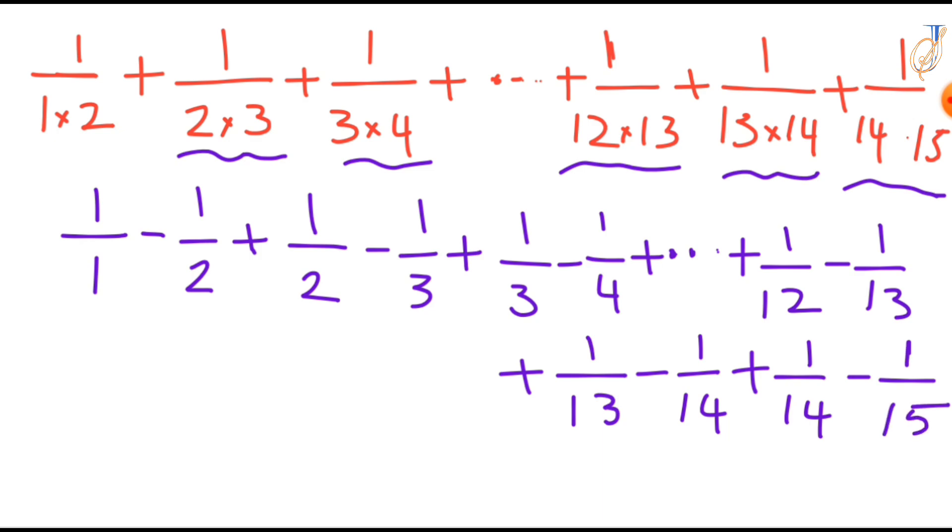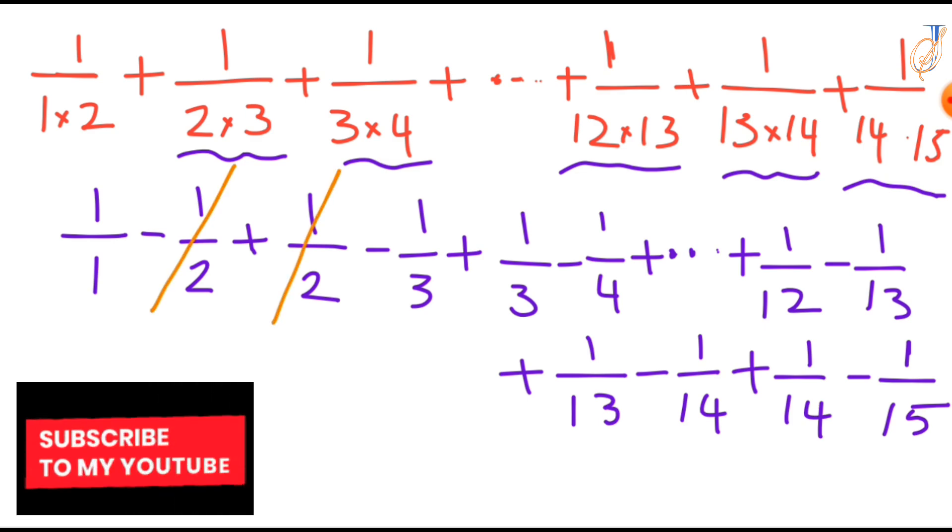Notice that this is a telescoping series where most intermediate terms cancel out. See minus 1 by 2 plus 1 by 2, minus 1 by 3 plus 1 by 3, minus 1 by 4 plus 1 by 4, minus 1 over 14 plus 1 over 14.